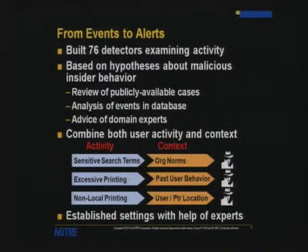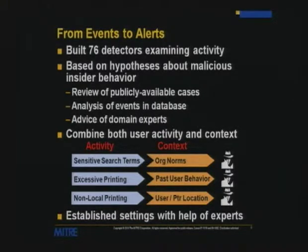These detectors combine activity and context. One example is violation of organizational norms — maybe terms you shouldn't be searching on. Excessive printing is an example using a folded normal estimator to look for low-probability occurrences in printing behavior based on past history — a volumetric anomaly. Another indicator is non-local printing: most people print to nearby printers and don't want to walk far, but malicious insiders might print to a printer down the hall or on another floor to avoid co-worker scrutiny.